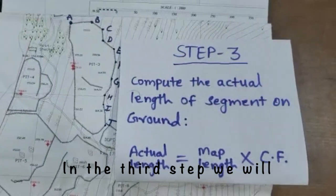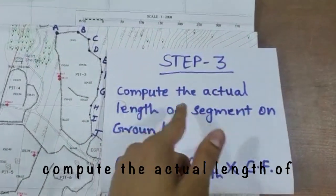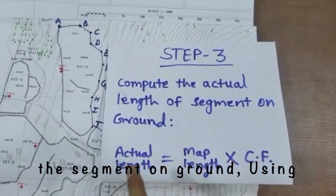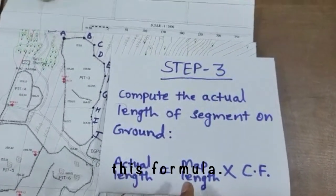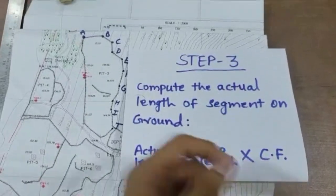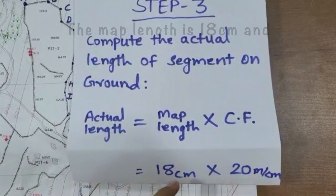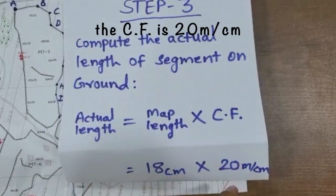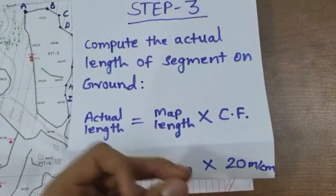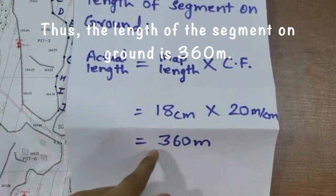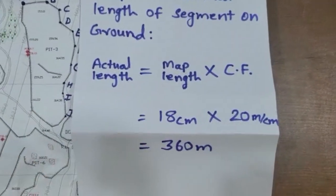In the third step, we will compute the actual length of the segment on ground using this formula where map length will be multiplied with CF. The map length is 18 centimeters and the CF is 20 meters per centimeter, so the length of the segment on the ground will be 360 meters.